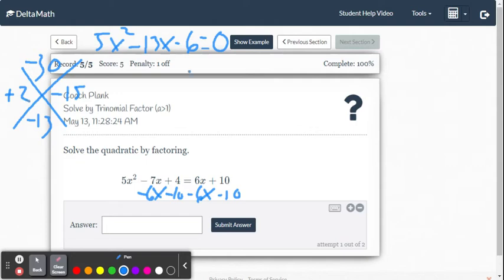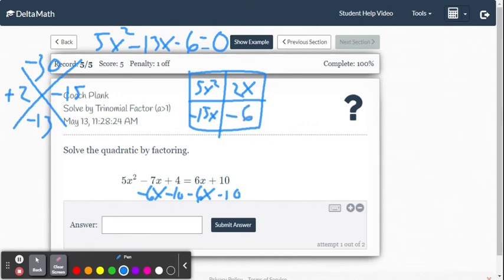All right, we're going to use that in our box or our generic rectangle. It's going to be 2x there. We're going to put the negative 15x here. You could do the vice versa. It doesn't matter. Upper left box, we put the 5x squared term. And the lower right box, we put the C value, which is negative 6.